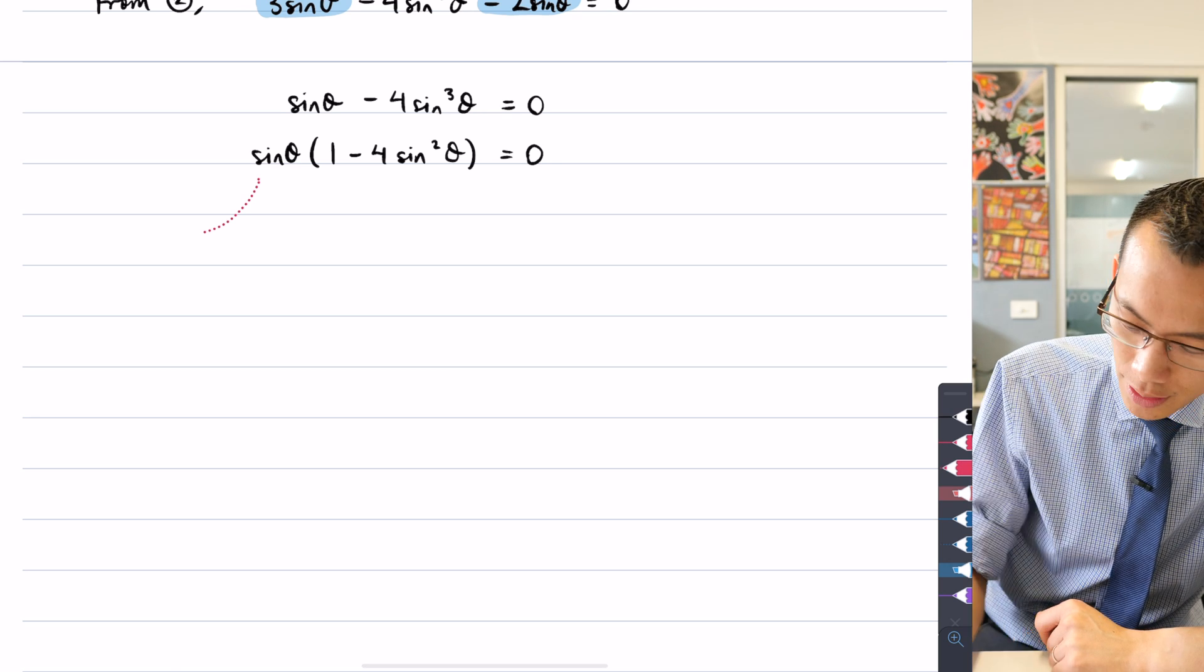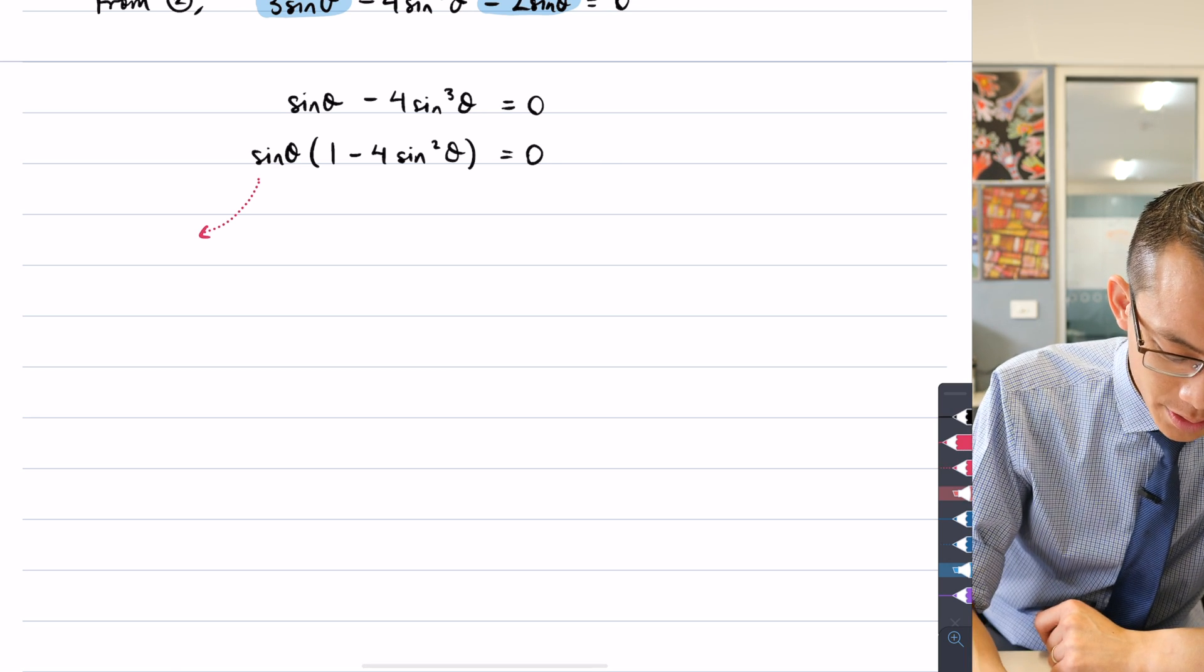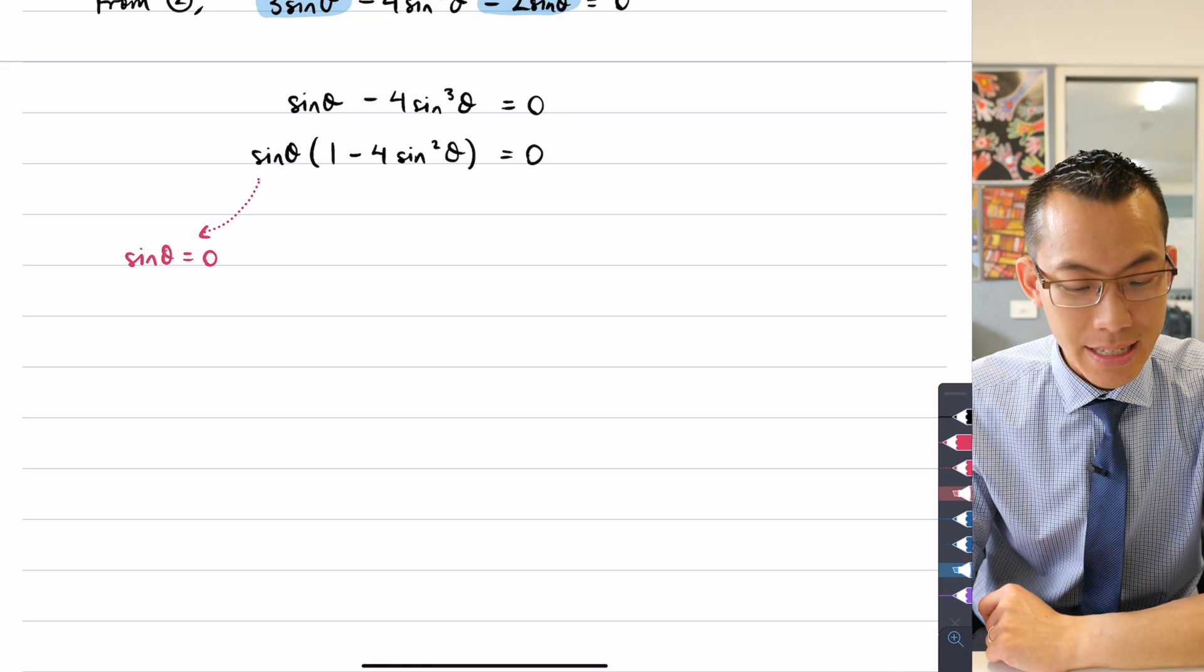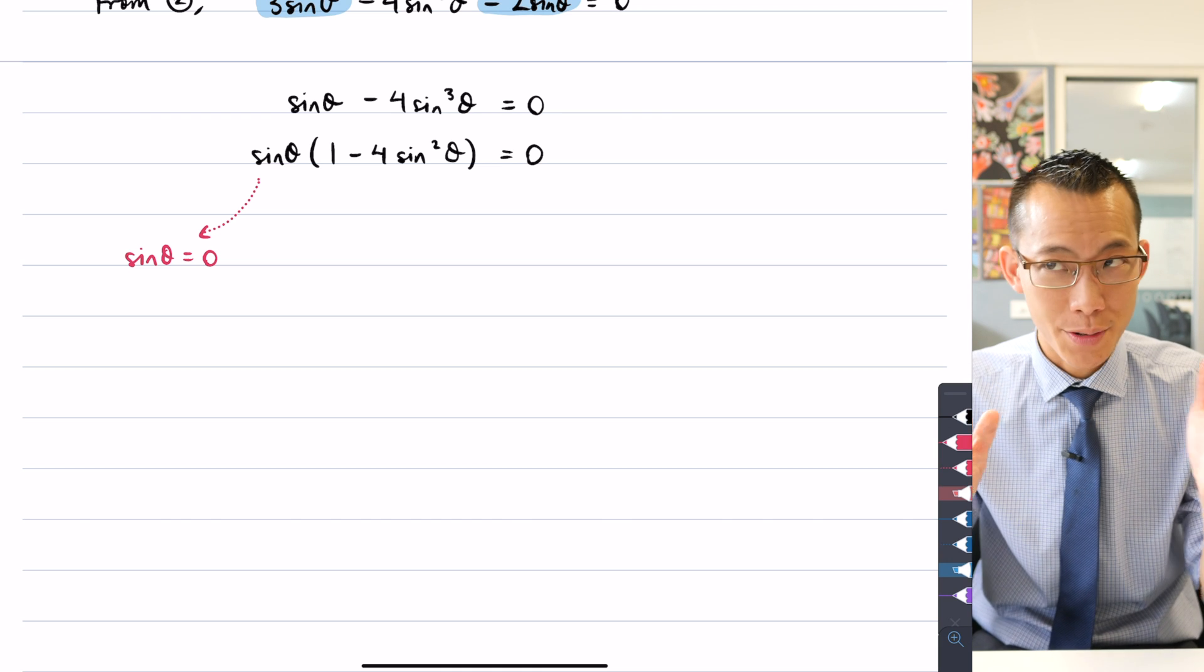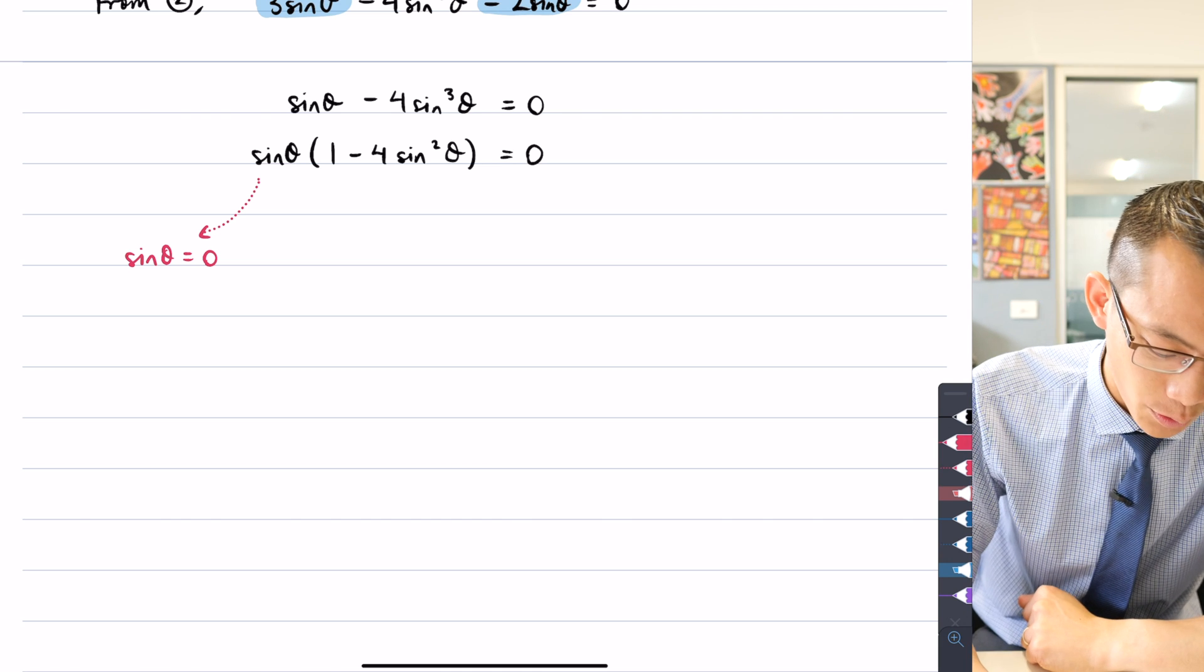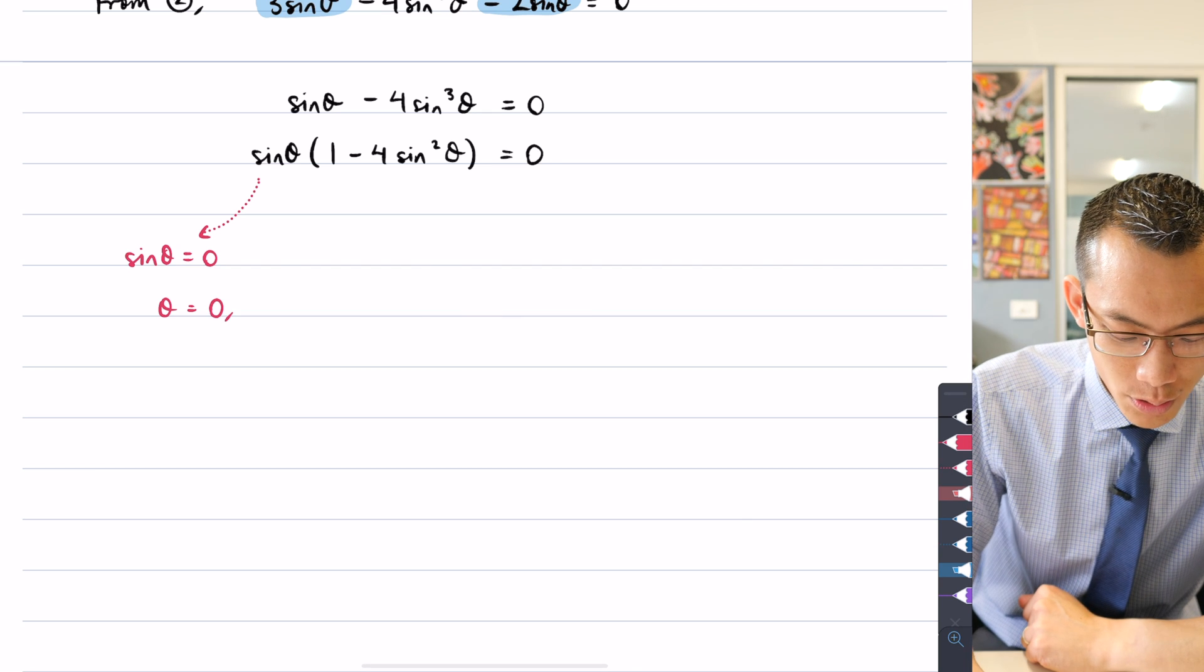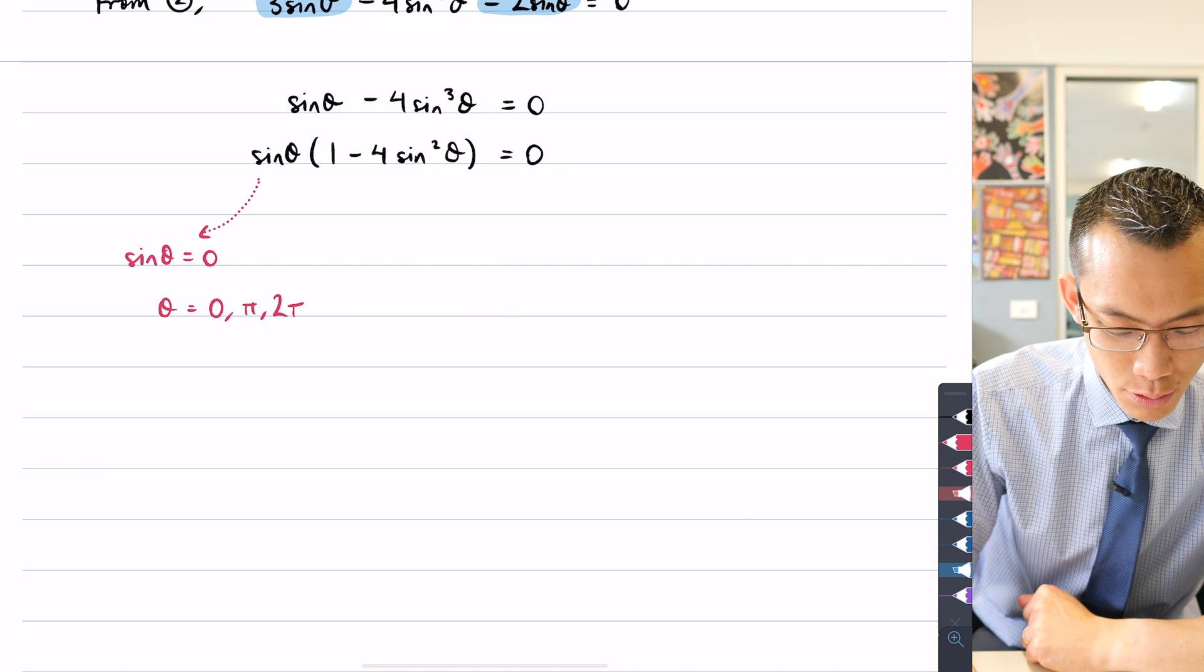So let's do each of those separately. Let's carry this guy over here. So if I deal with sinθ equals 0, this is really easy. In the given domain 0 to 2π, which is our standard domain that we're quite used to dealing with, the solutions that I'm interested in for sinθ will be 0, π, and 2π.